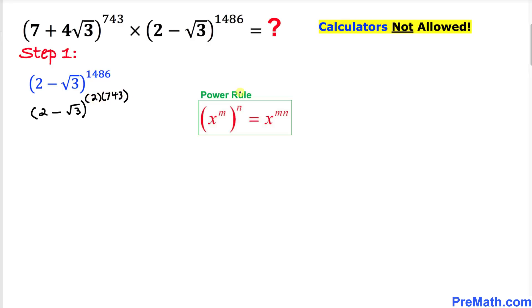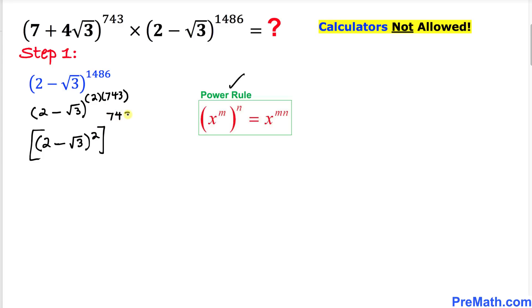Now we are going to apply the power rule, so this can be written as [(2 - √3)²]^743.